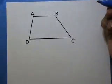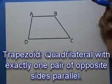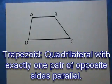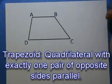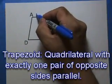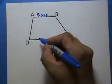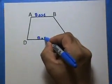The trapezoid is a quadrilateral with exactly one pair of opposite sides parallel. The parallel sides are called bases. That's one base, and here's another base.